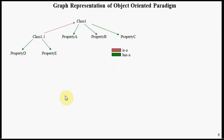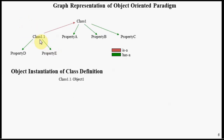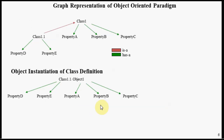The object-oriented paradigm can be represented as a graph problem. Here we have a class called Class 1 with properties A, B, and C, and a relationship between the class definition and its associated properties. We also have another class called Class 1.1 with properties D and E, with an 'is-a' relationship meaning that Class 1.1 is a specialization of Class 1. If we want to instantiate Class 1.1 and call that Object 1, we first instantiate properties D and E, then follow the inheritance link to inherit properties A, B, and C.